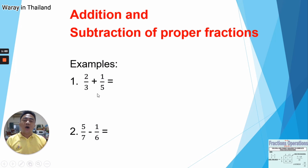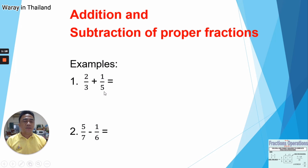Now, on how we can add these. We're going to check first the denominator — the denominator will have a common value. What would be the common denominator between these two, 3 and 5? By the help of the LCM, or the least common multiple, we will know what is the common denominator between 3 and 5. And that is — what is the LCM of 3 and 5? That is 15.